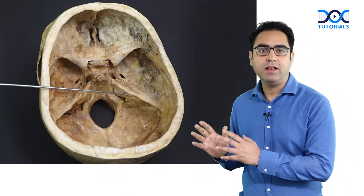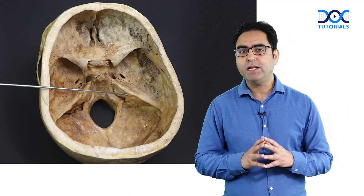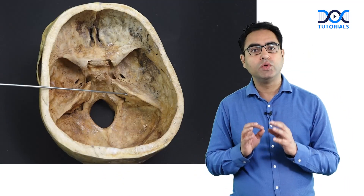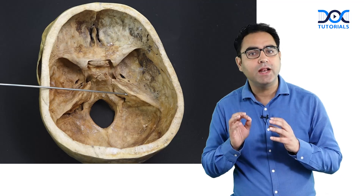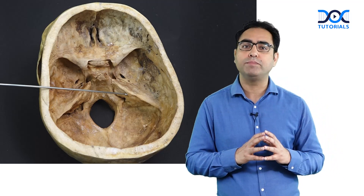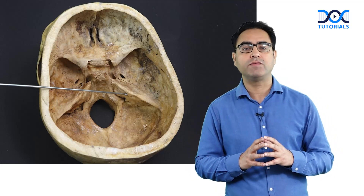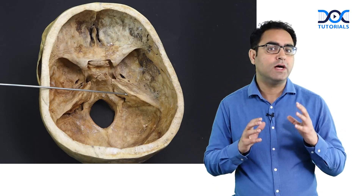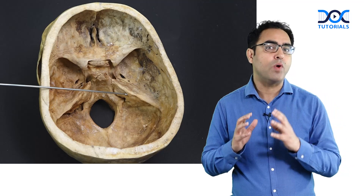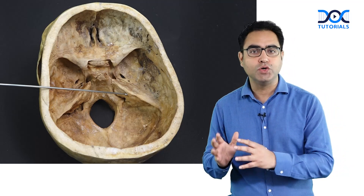Friends, this is Dr. Rajiv Devan, your ENT faculty, and I bring to you a very important anatomical ENT question. Look at this picture of the skull — the pointer is indicating an anatomical landmark on the posterior aspect of the temporal bone. What is the pointer indicating to?